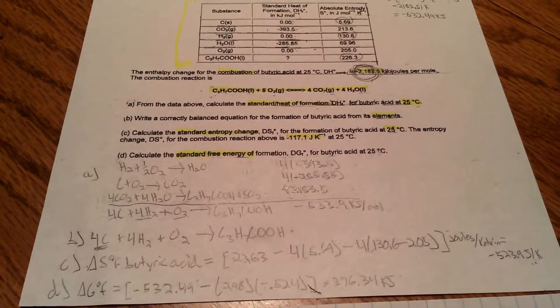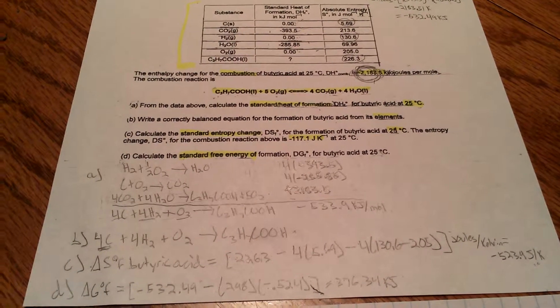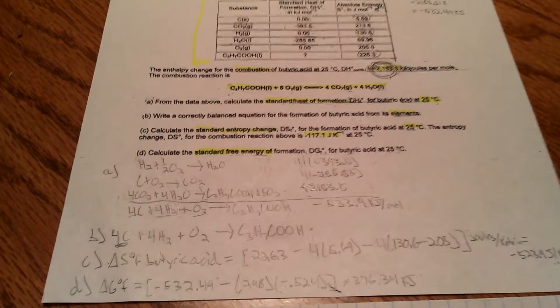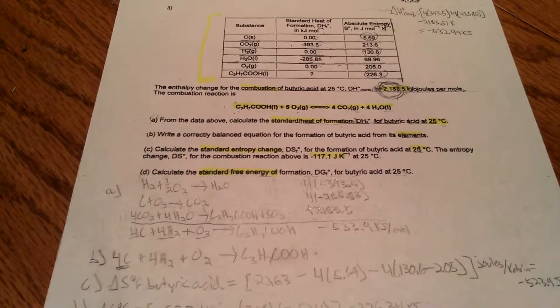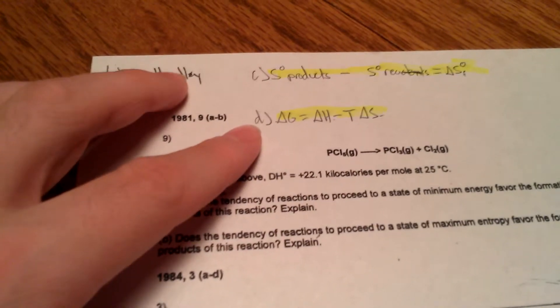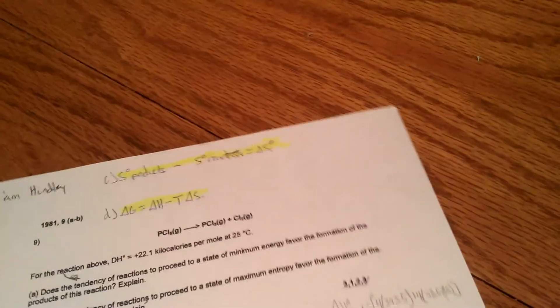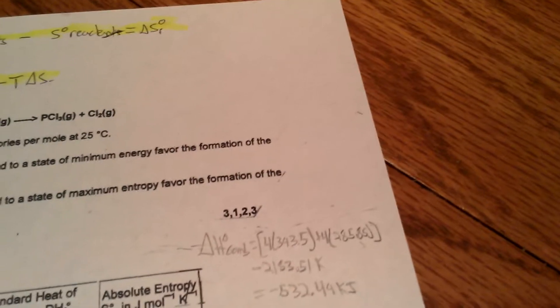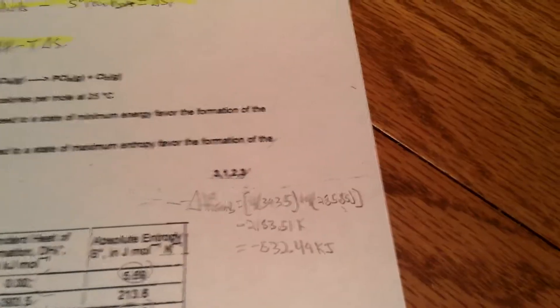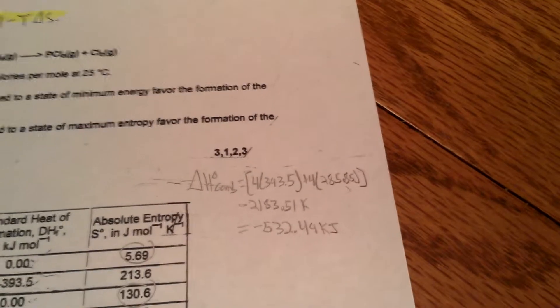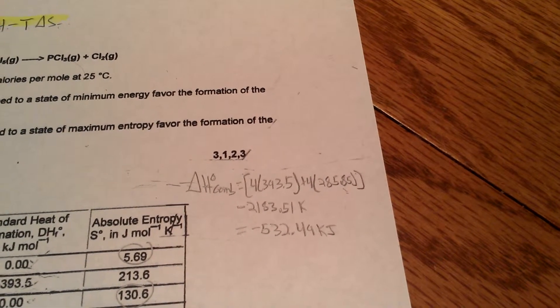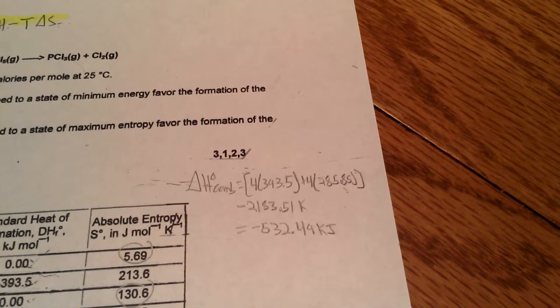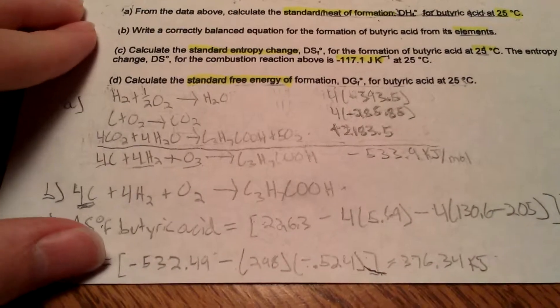For part D, you must calculate the standard free energy of formation for butyric acid at 25 degrees Celsius. The equation for standard free energy, or Gibbs free energy, is seen here. First you must calculate the standard heat of combustion of butyric acid to plug in for delta H. That calculation is pictured here and comes out to be negative 532.49 kilojoules, which you will plug in for delta H.